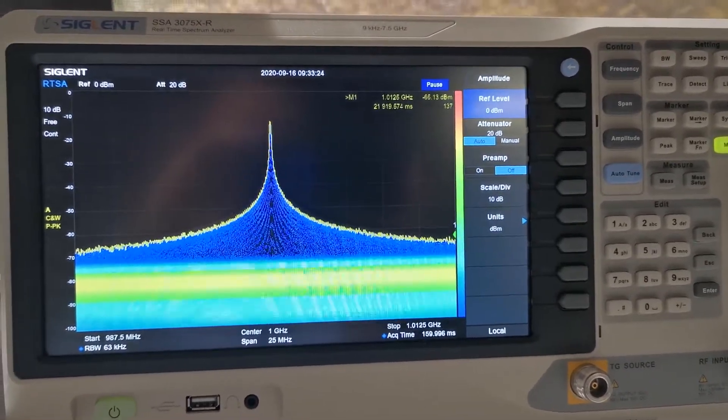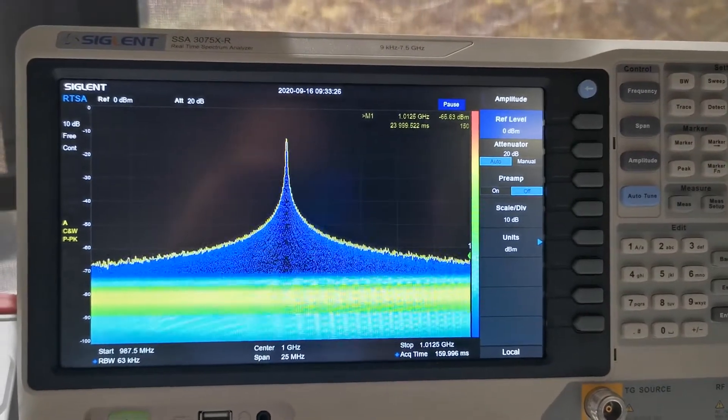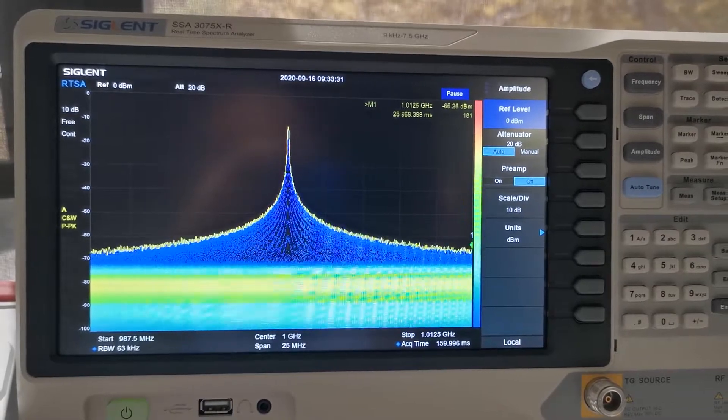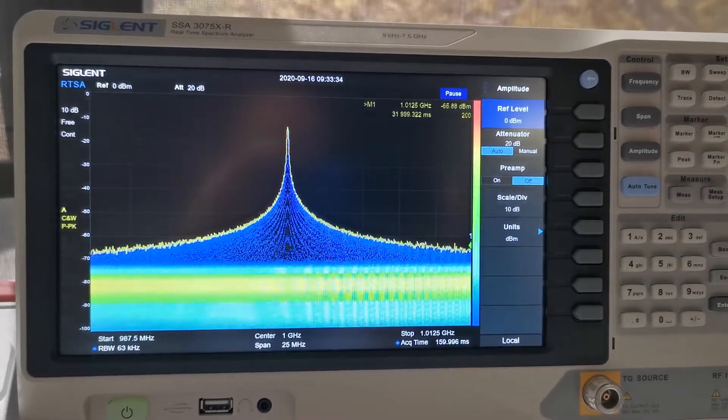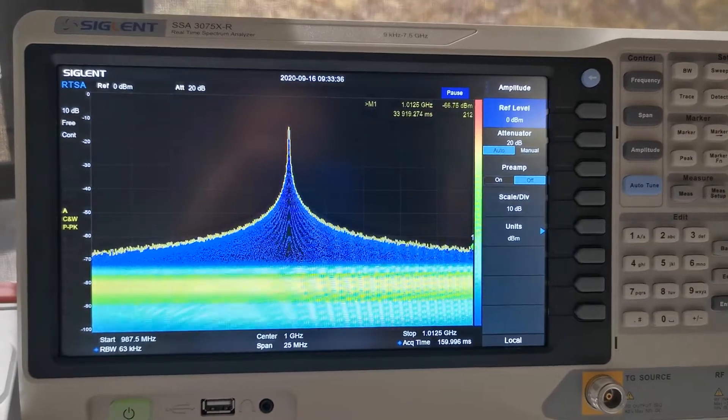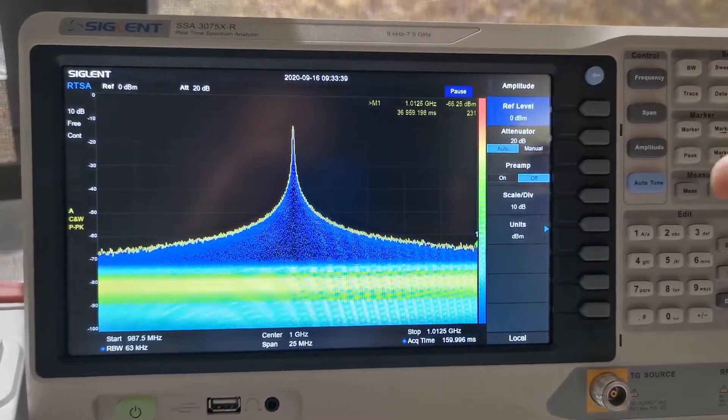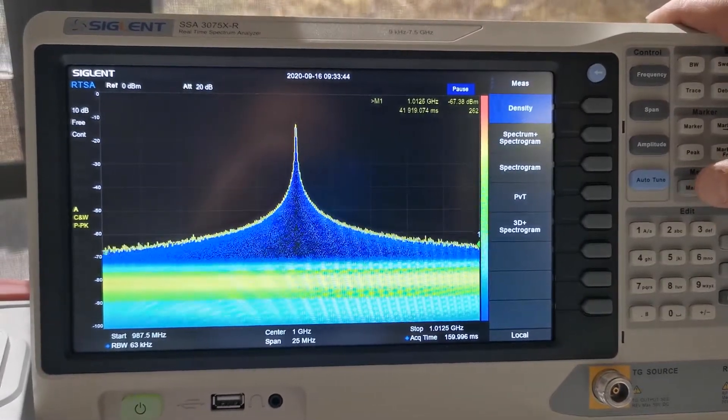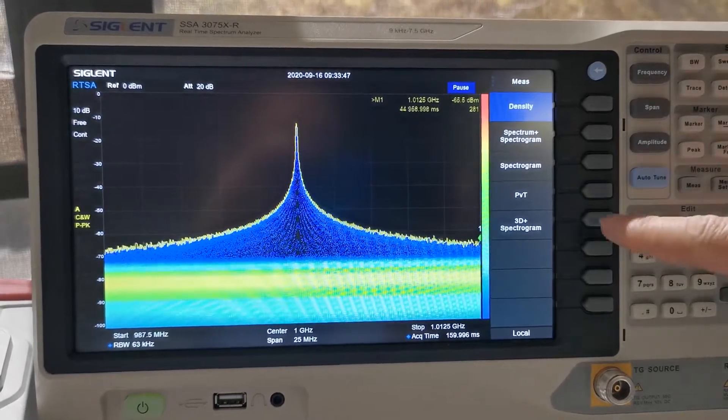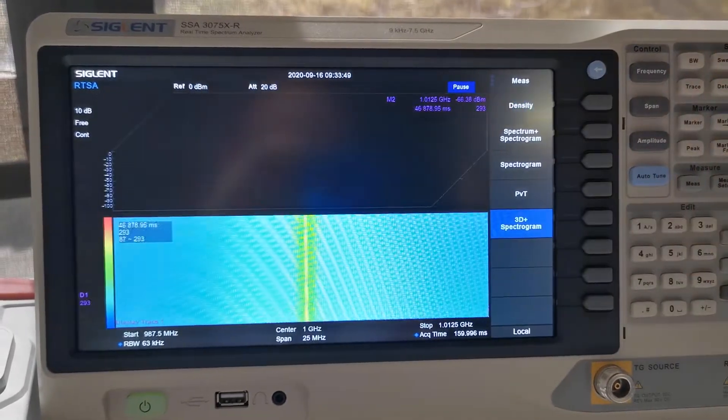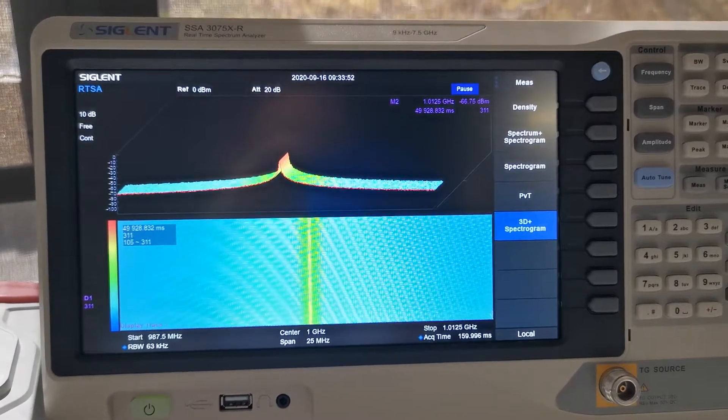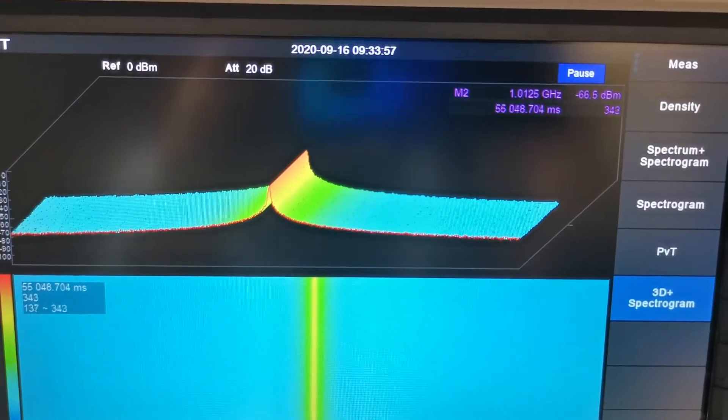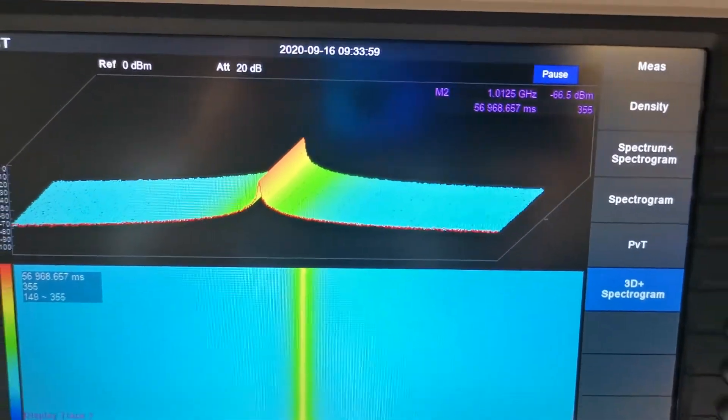As we know, when you use the software to do the FFT, you will have gap because it's not fast enough. By using the hardware to do the FFT, real-time spectrum analyzer can make sure it's gap-free. And there are several different ways to present your result in the real-time mode. You have the density, you have the spectrogram, PVT, and my favorite is the 3D spectrogram, where you can have the waterfall diagram and the 3D spectrogram as well.